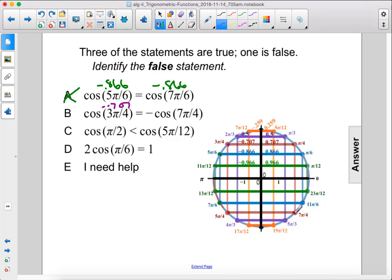7π over 4 is here. It has that same red line, so it does have the cosine of square root of 2 over 2, or 0.707, but we have this negative sign here, so this is true. Eliminate it.